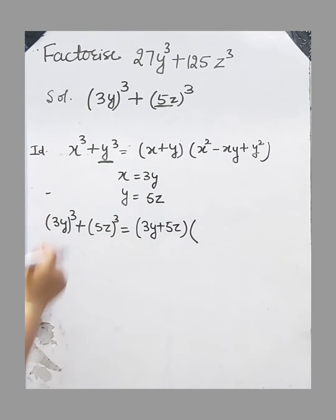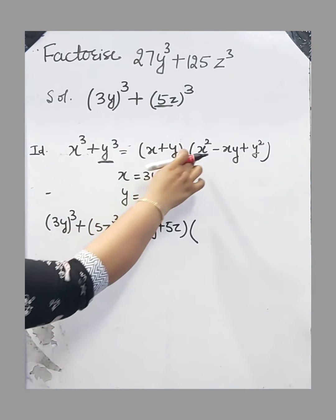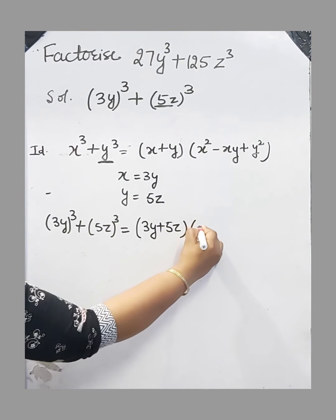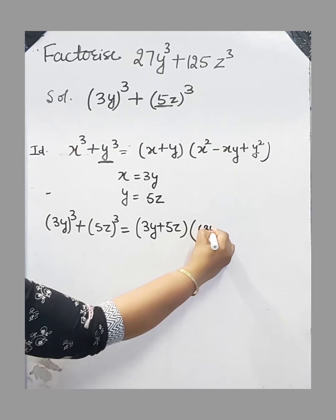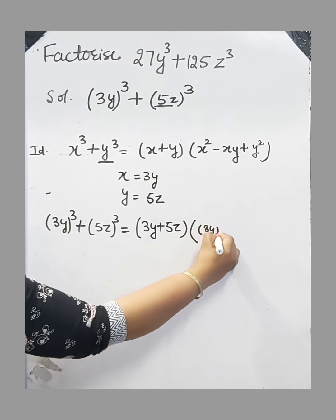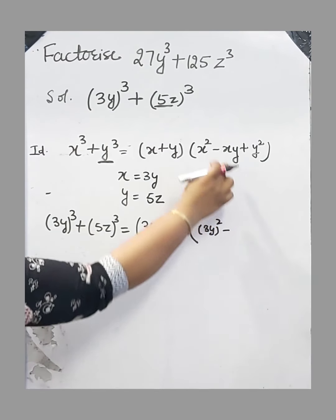Now in the next bracket, put the value of x and y. x is equal to 3y, which means (3y)². Minus xy.